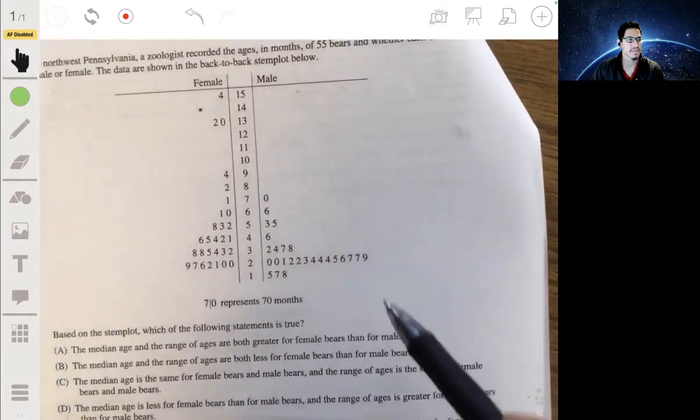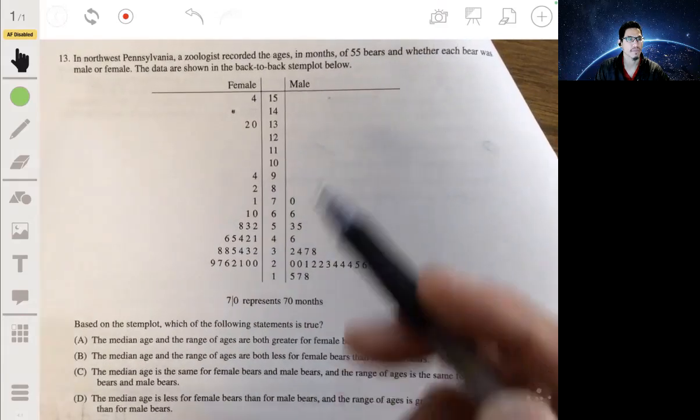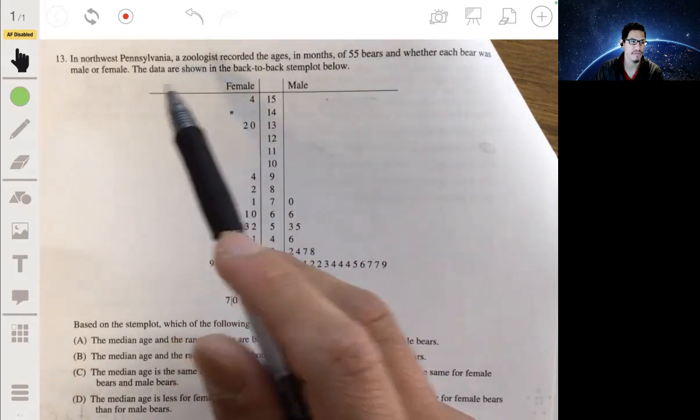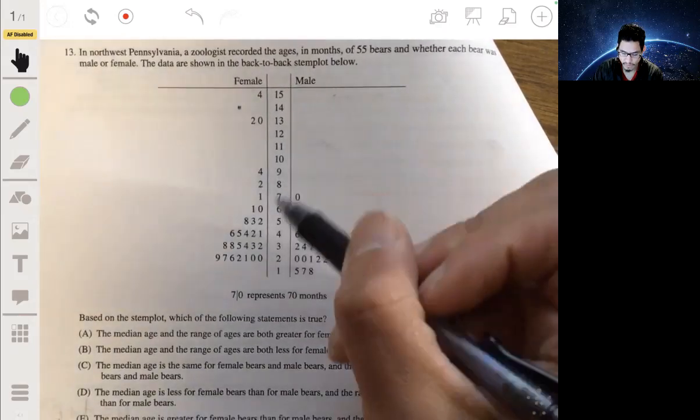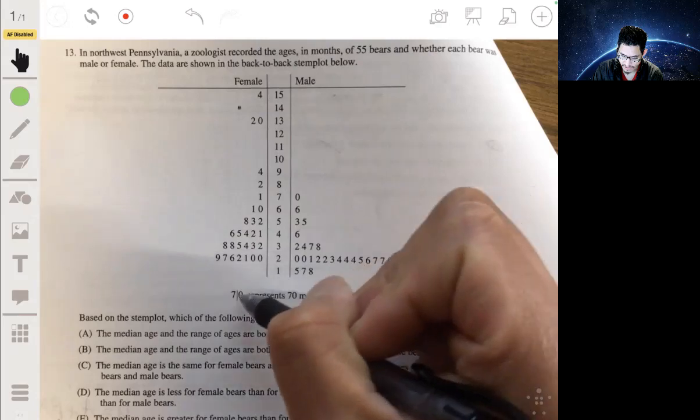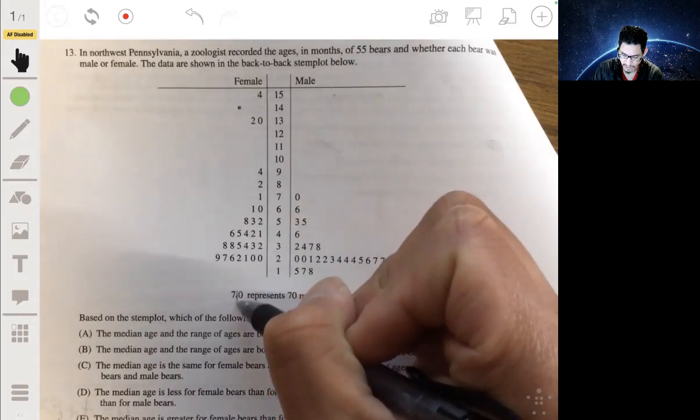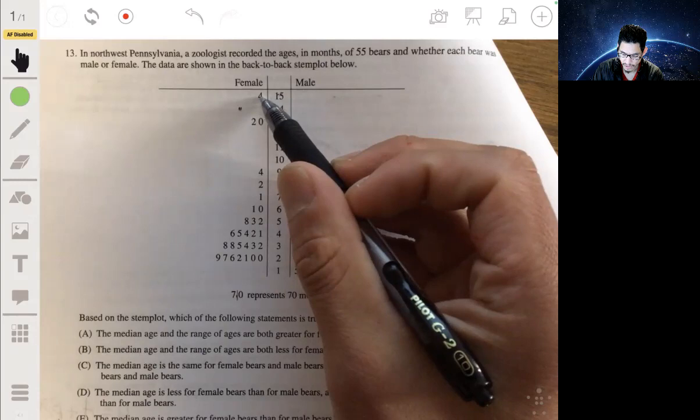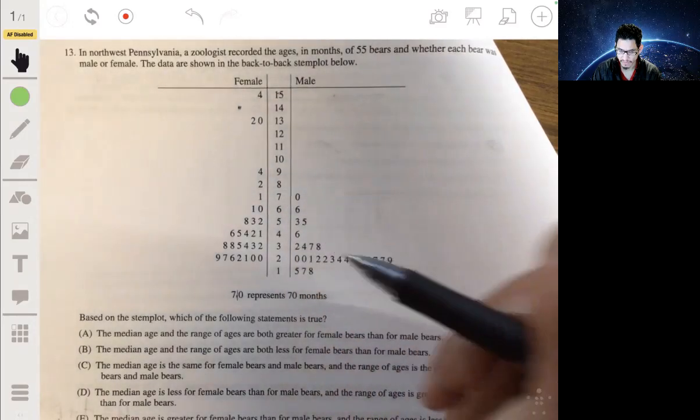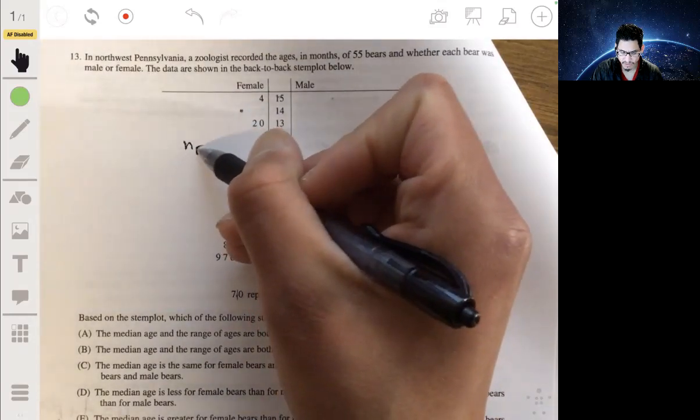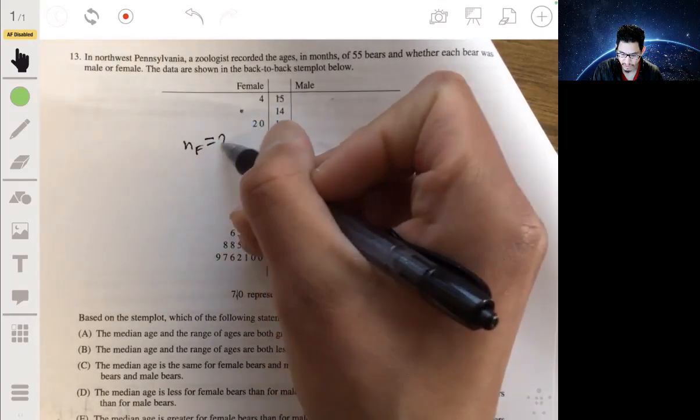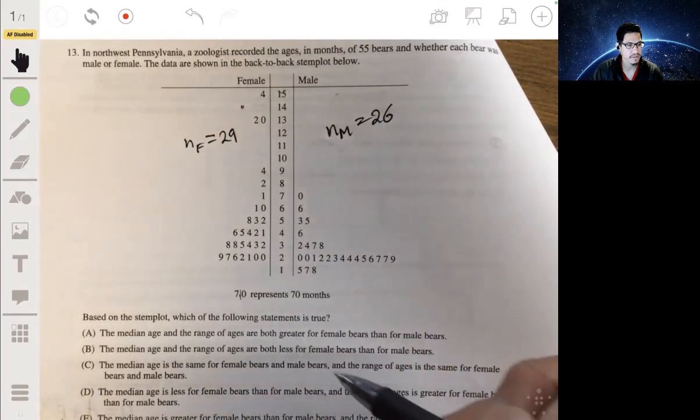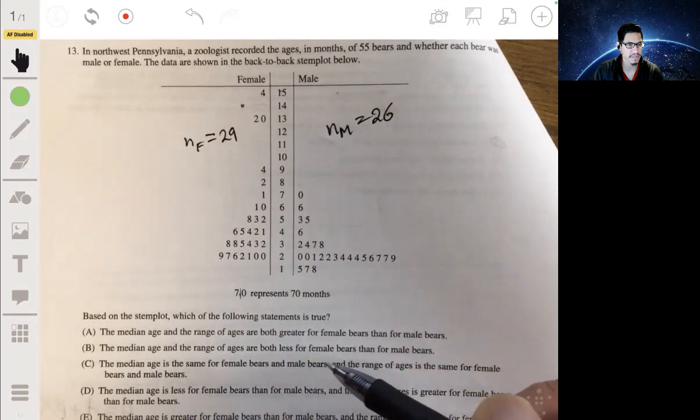Alright, 13, we have this data. We got the recorded ages in months of 55 bears, whether they were male or female. And we have a back-to-back stemplot. Since we have the key here, 7 slash 0 represents 70 months, so the females go from 20 months all the way to 154. And the males go from 15 to just 70. And if you count the females, I think there's 29. Yeah, there's 29. The number of females would be 29. The number of males would be 26. It looks like we're looking at, we want to compare the ranges and means, or ranges and medians.